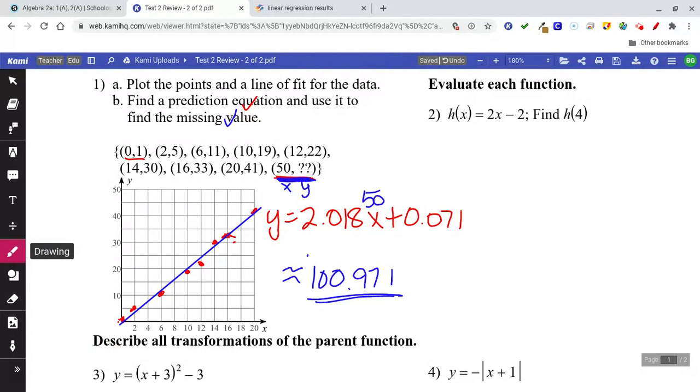Number two, evaluate the function. When we find h of 4, all that means is plug in 4. So we take this equation and we're going to plug in 4. Use a calculator if you need to, but this one's not too bad. 8 minus 2 is 6.